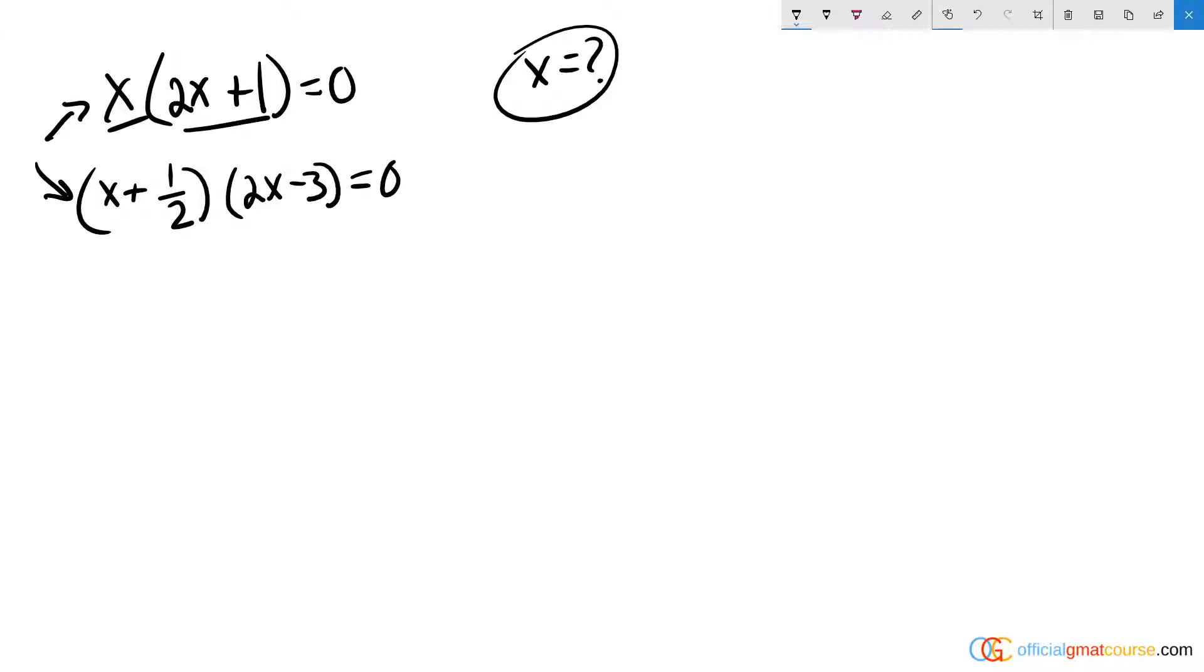Well, what values could I plug into the first equation to set X times 2X plus 1 equal to zero? The two options are: I plug in a zero here, that would wipe out this side, or I make this side equal zero.